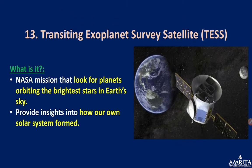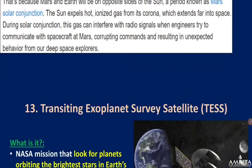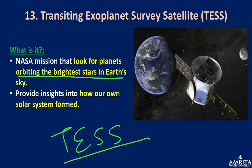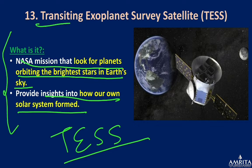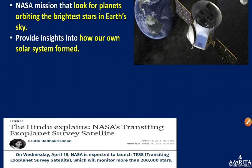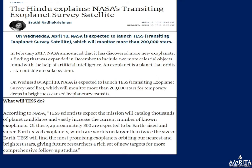TESS — Transiting Exoplanet Survey Satellite — is a NASA system that looks for planets orbiting the brightest stars in Earth's sky, providing insights into how our own solar system was formed.